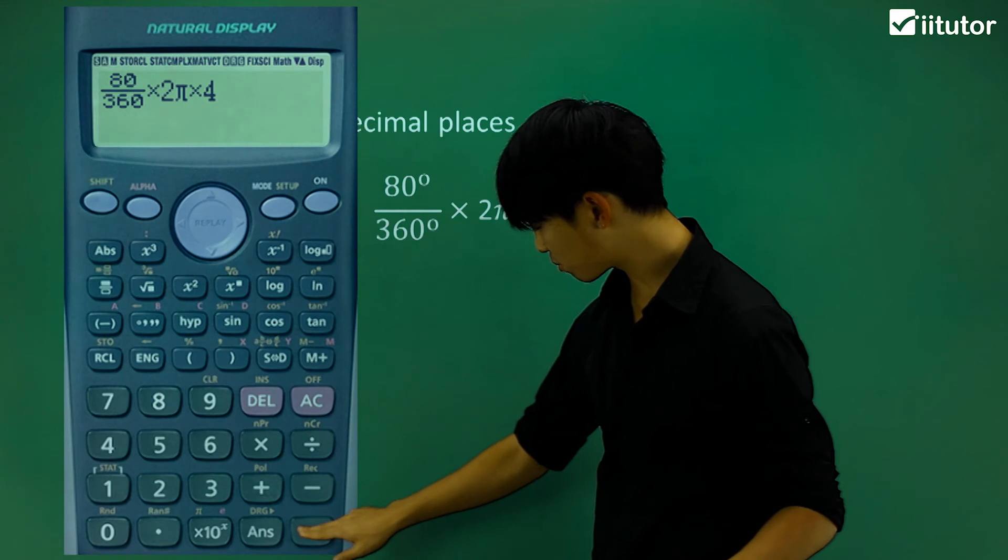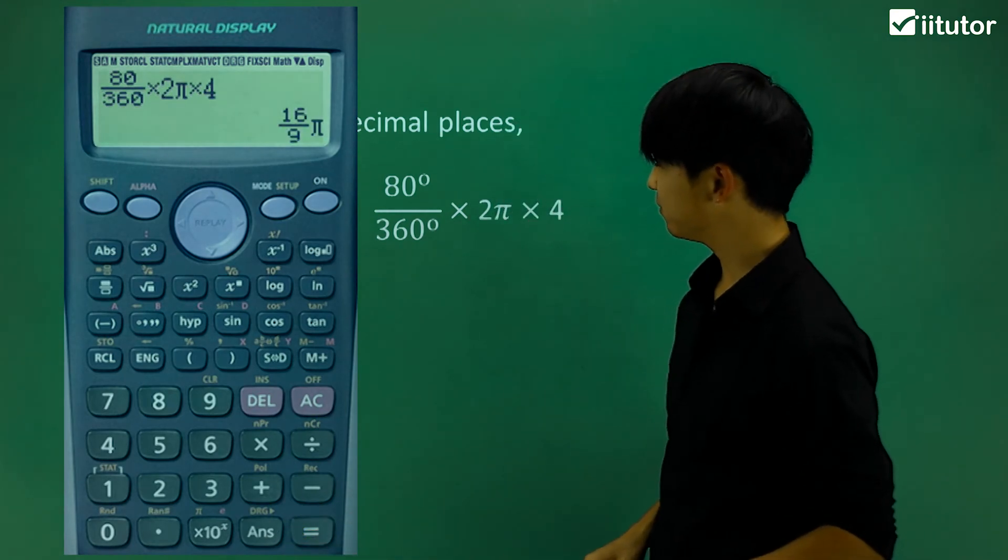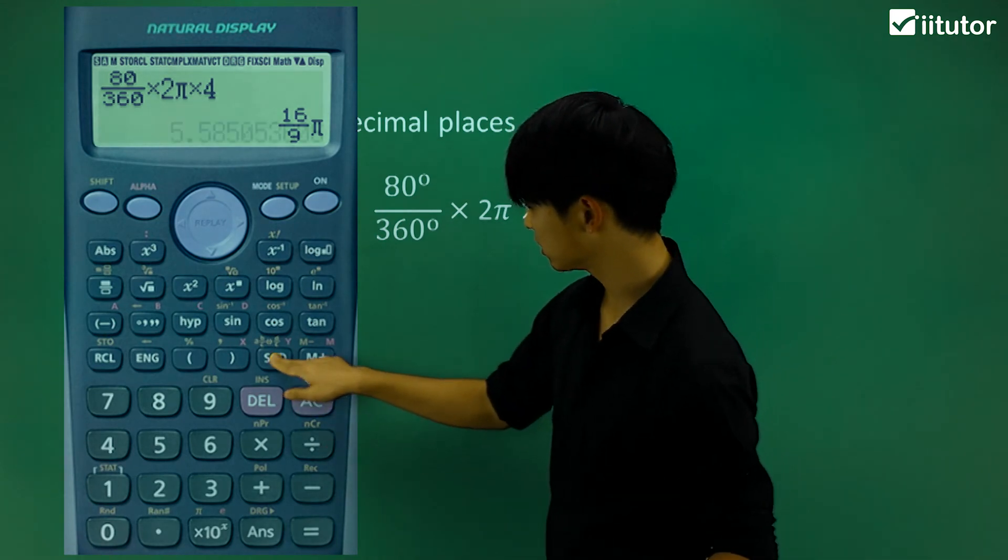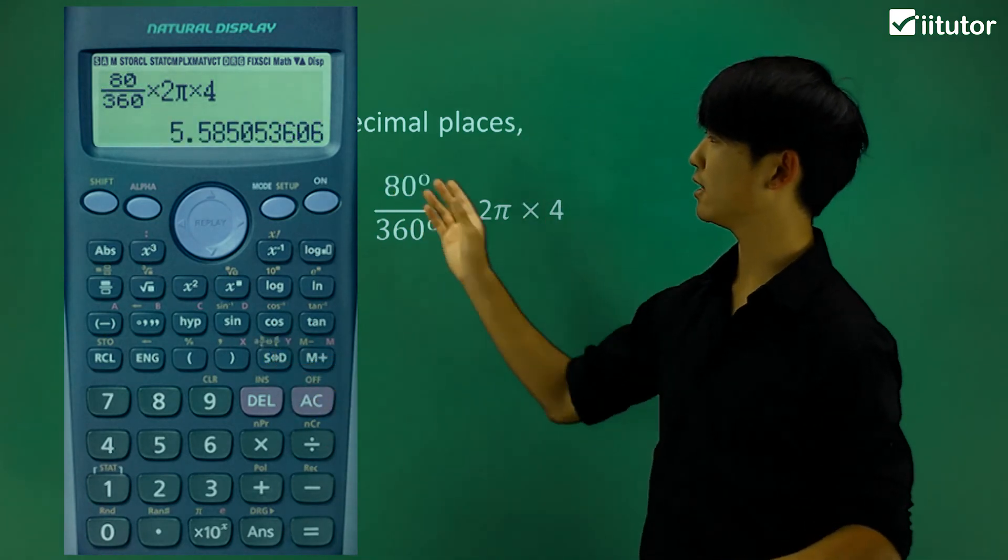So if I calculate that, I'm going to press equal sign and it's still giving me in terms of pi, but I want it in decimal place, which means I'm going to press this little conversion button. And finally I got it in decimal places.